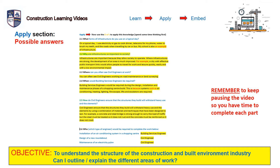Number one: what forms of infrastructure do you use on a typical day? An answer could be: on a typical day I use electricity or gas to cook dinner, telecoms from my phone, water to brush my teeth, and the roads when travelling by car or bus. My school is also an example of infrastructure — if we didn't have schools, where would people be educated? Number two: why are infrastructures so important to society? Infrastructures are important because they allow society to operate. Where infrastructures are strong, the development of an area is much improved. For example, a city with effective public transport links would allow people to travel for work and leisure quickly, easily, and with a low environmental impact.